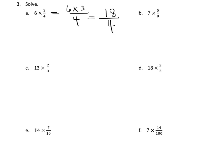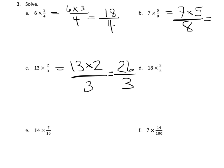13 times two thirds is 13 sets of two thirds, which is 26 thirds. Leave your answer just like that. Okay, and B, seven times five eighths is like seven times five sets of eighths, which would be 35 sets of eighths.